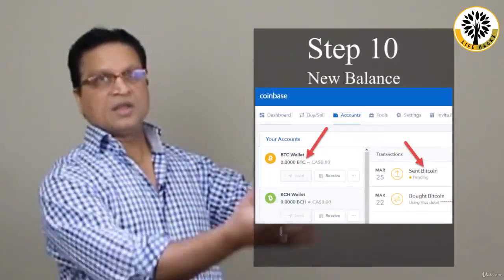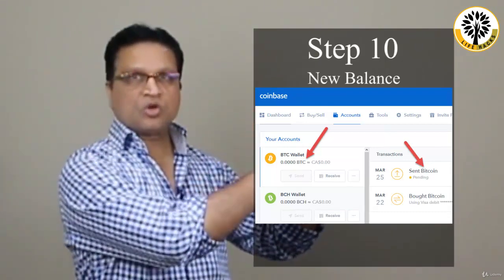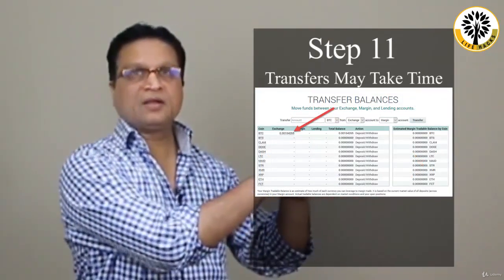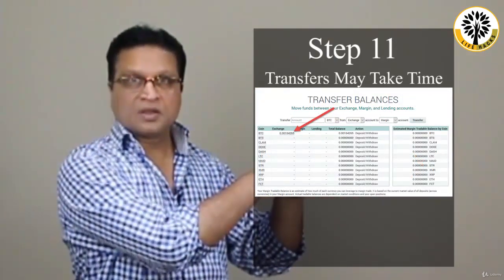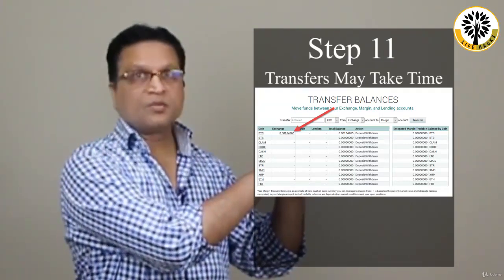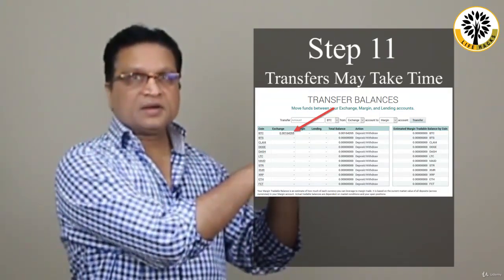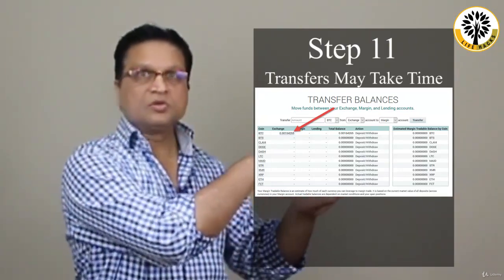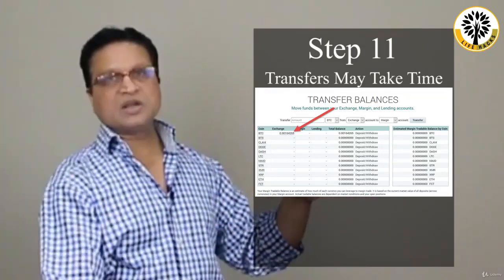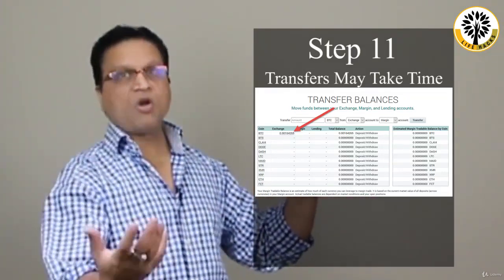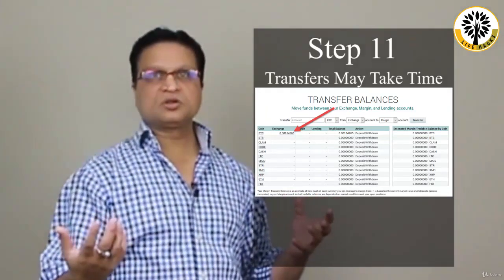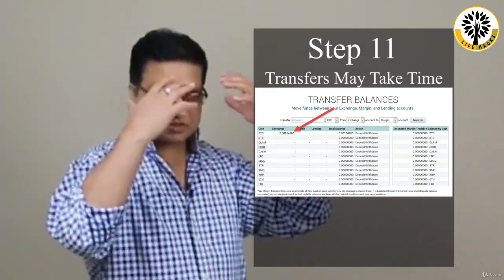Once you click deposit, this money is going over to Poloniex and it will show in the Poloniex exchange after some time. Don't panic — it takes a little bit of time, maybe five to ten minutes, sometimes a little bit more. Once you come back to Poloniex you'll see that money has started showing, and you'll see immediately on Coinbase that the money is gone.